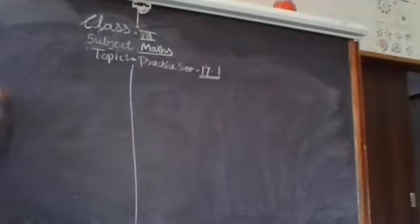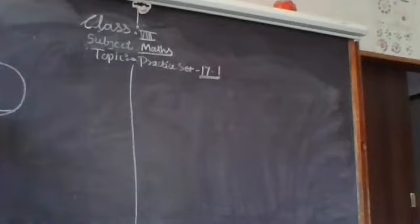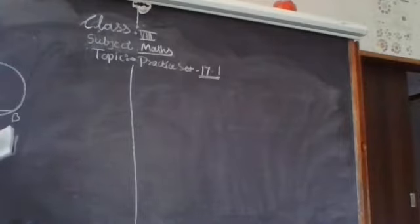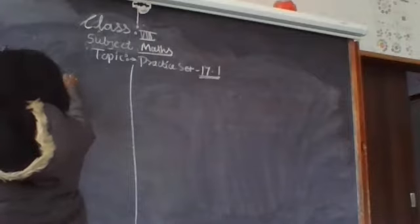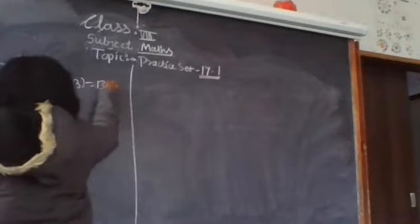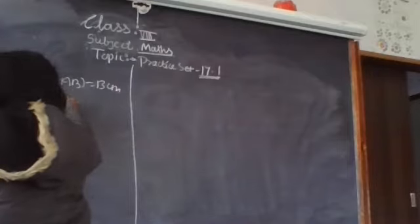So the given is that, question number 1, the diagram is given here. The centre P is given, and AB is the chord of the circle. The length AB is given as 13cm, and what we have to find is length QB.